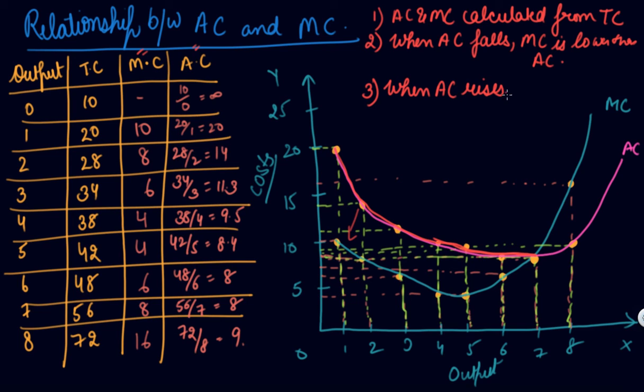Third: when AC rises, your MC is greater than AC. See, when from here your AC starts rising, your MC is greater than AC.